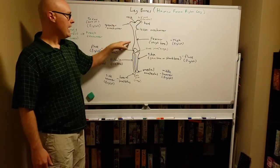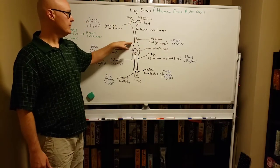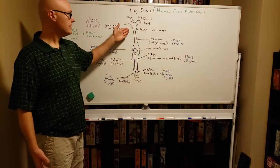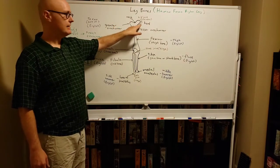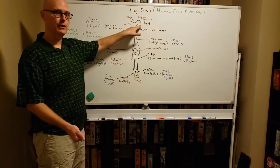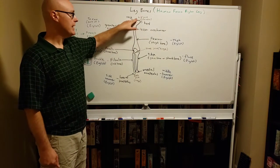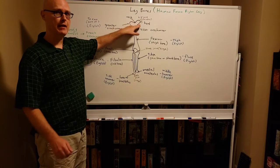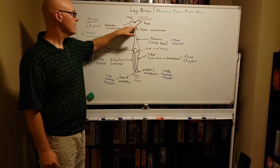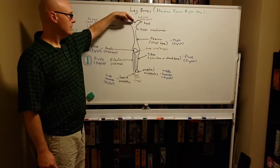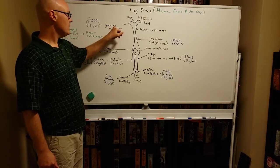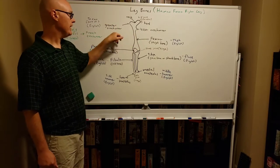The femur has some distinct characteristics. It has a head — this head is the part that goes into the pelvis, right into the hip joint, which is a ball and socket type of joint. There's a neck, and then there's the greater and lesser trochanters.